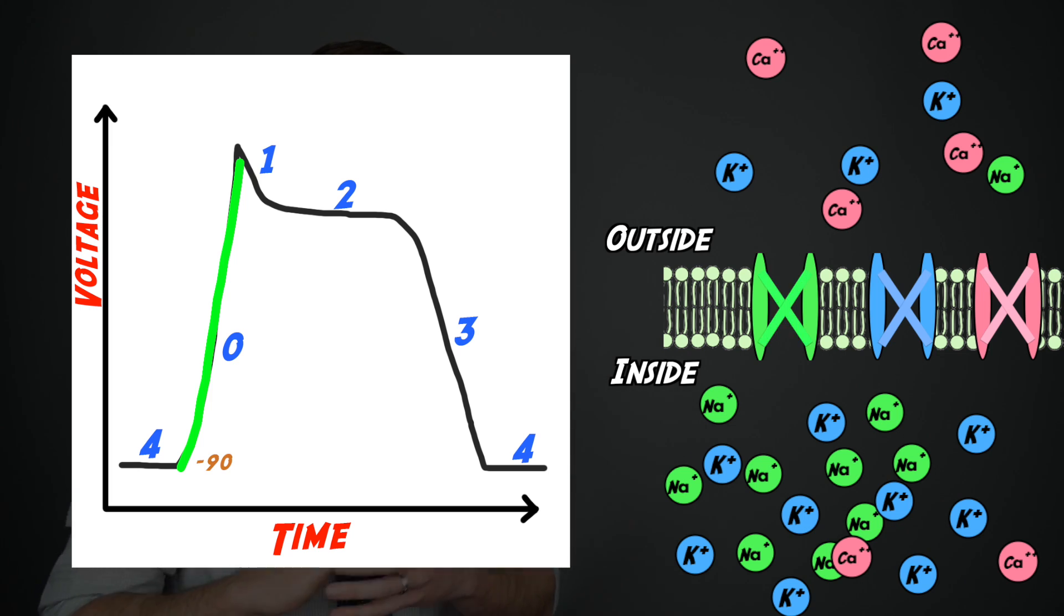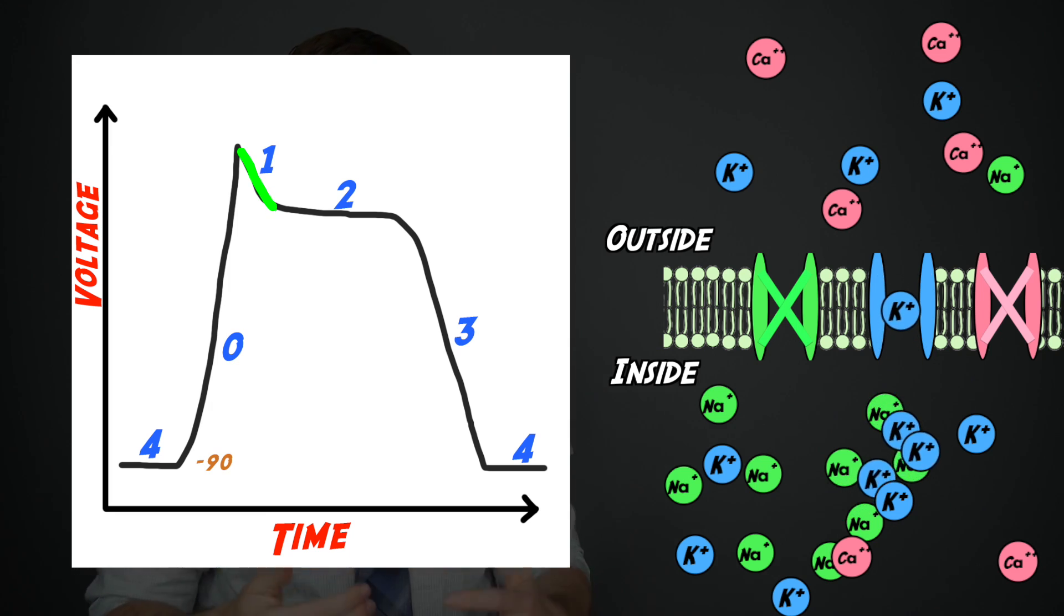At phase one, those sodium channels close off and now potassium channels open that allow some potassium ions to leave the cell, bringing that electrical charge closer back down negative.